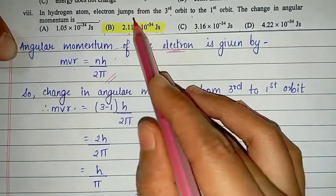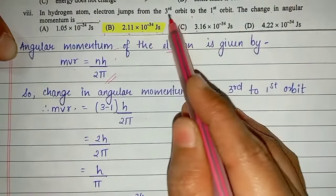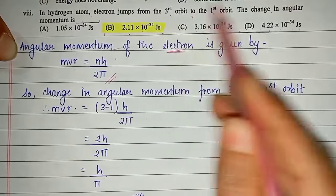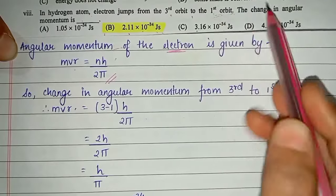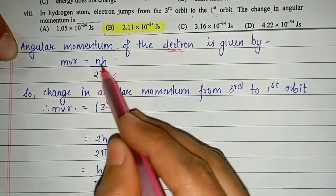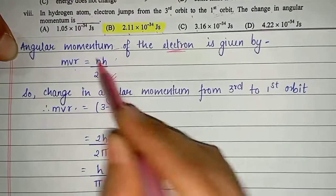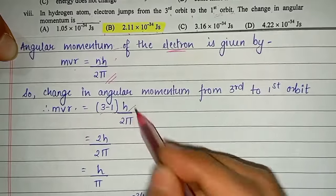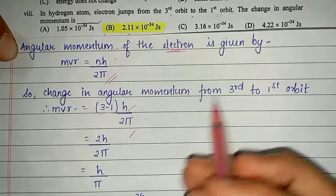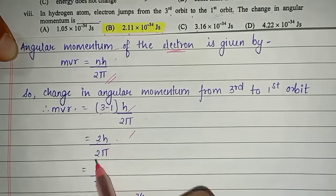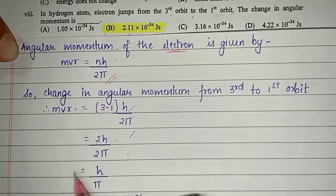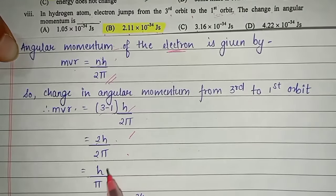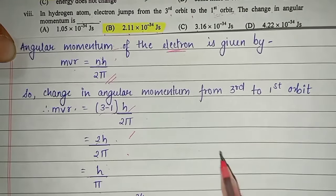Here the electron jumps from the third orbit to the first orbit. So the change in angular momentum is (3-1)h/2π = 2h/2π = h/π.